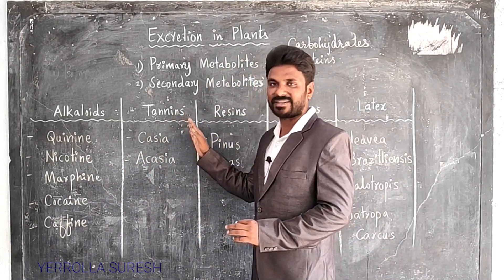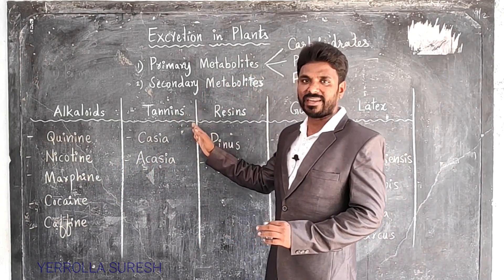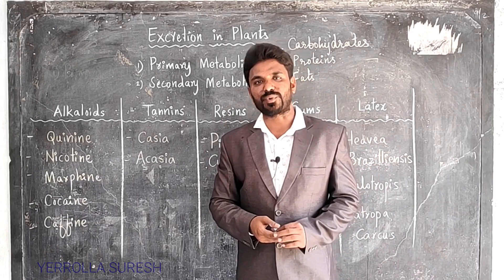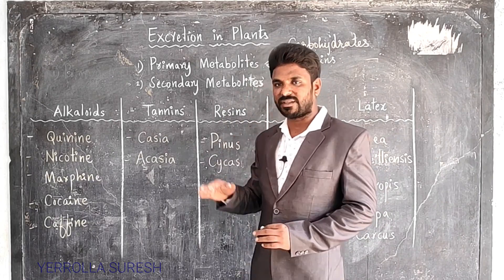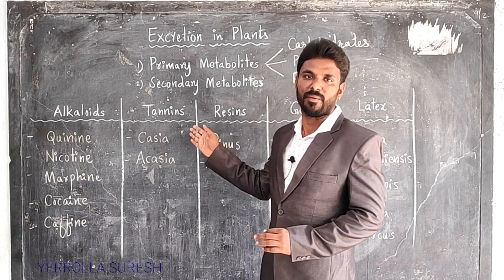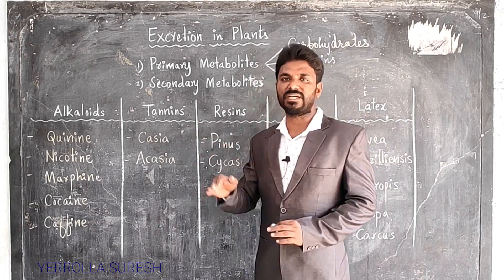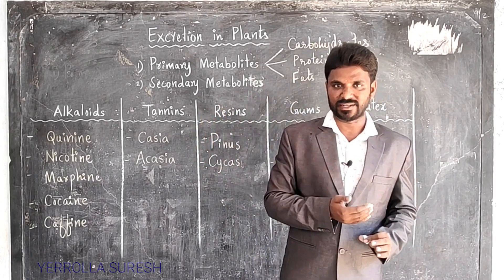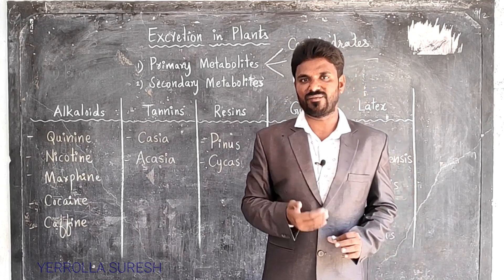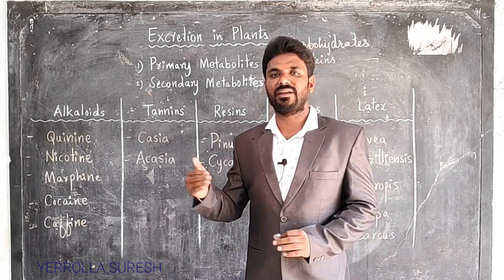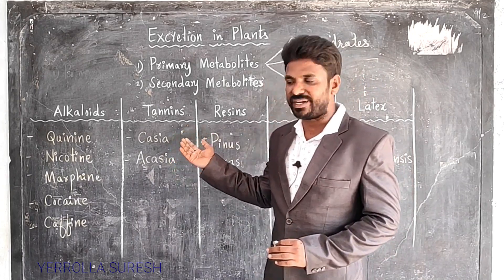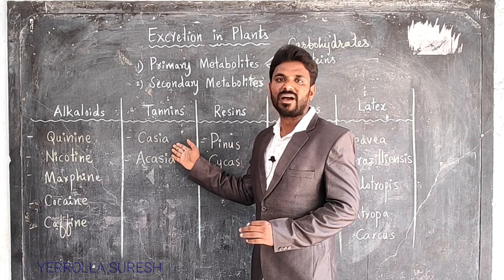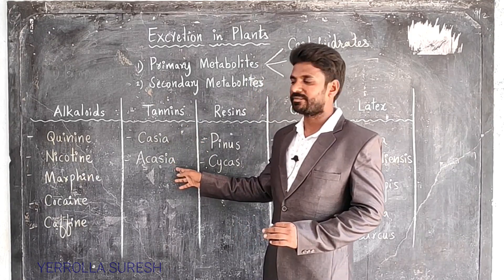Next, tannins. Tannins are carbon waste products — they are made of carbon compounds. They are especially used in the tanning of leathers, meaning cleaning of leathers, and in the preparation of medicines. Examples of plants producing tannins are Cassia and Acacia.